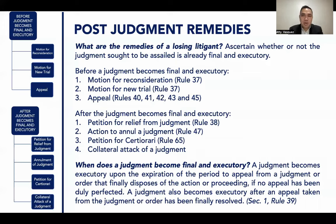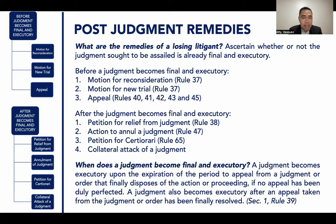What are the remedies of a losing litigant? The first thing a litigant must do is to ascertain whether the judgment sought to be assailed is already final and executory. A judgment becomes final and executory upon the expiration of the period to appeal from a judgment or order that finally disposes of the action or proceeding, if no appeal has been duly perfected. A judgment also becomes executory after an appeal taken from the judgment or order has been finally resolved.